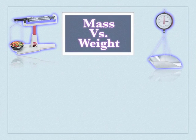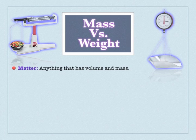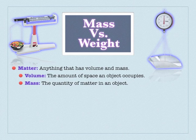A good place to start, if we're going to be talking about matter, is to differentiate between the terms mass and weight, which is sort of a subset of the concept of matter. Matter is the stuff of the universe — anything that has volume or mass is considered matter. Volume is how much space something takes up, and mass is the quantity of stuff in that matter.